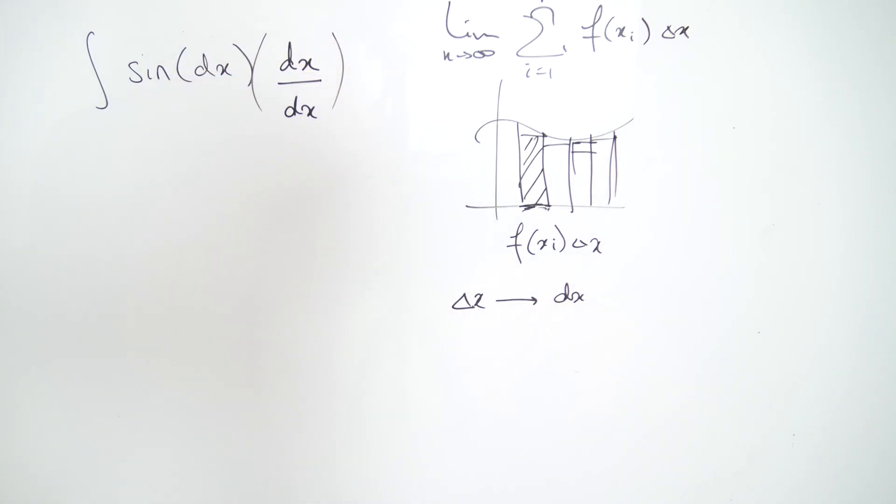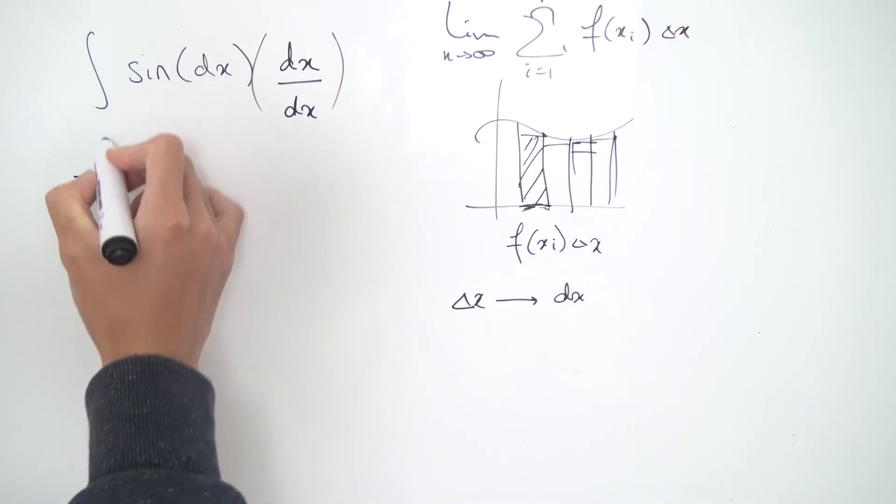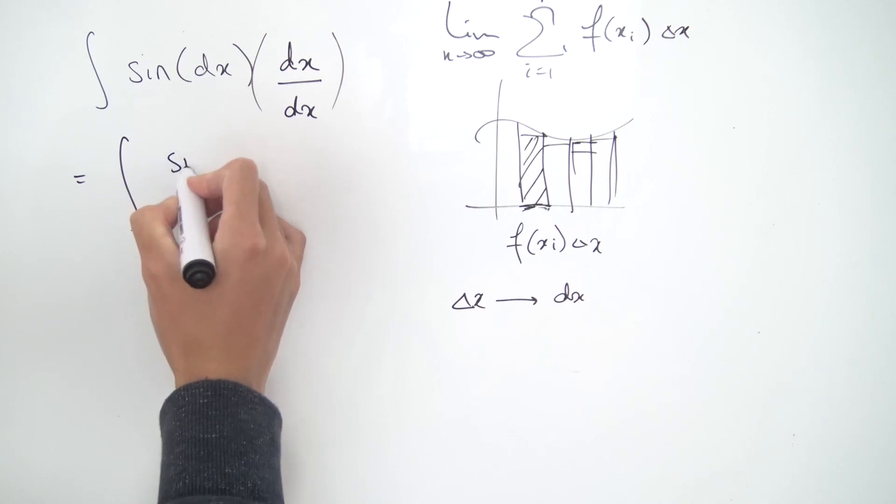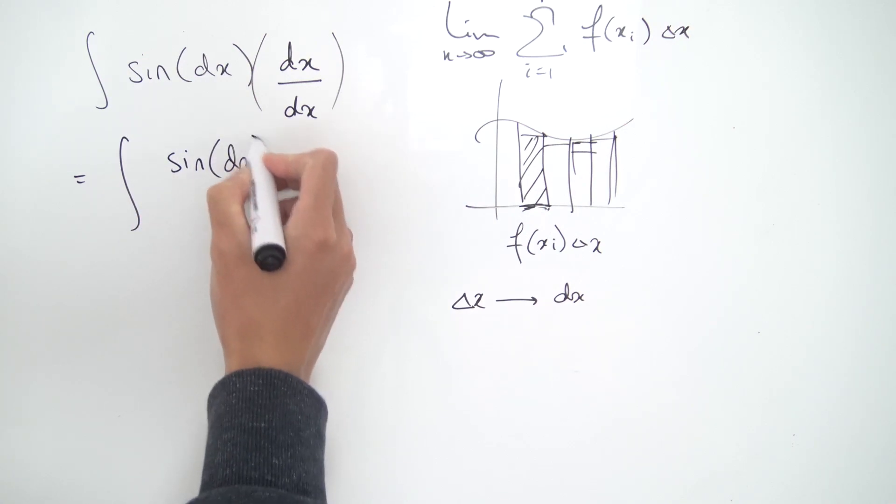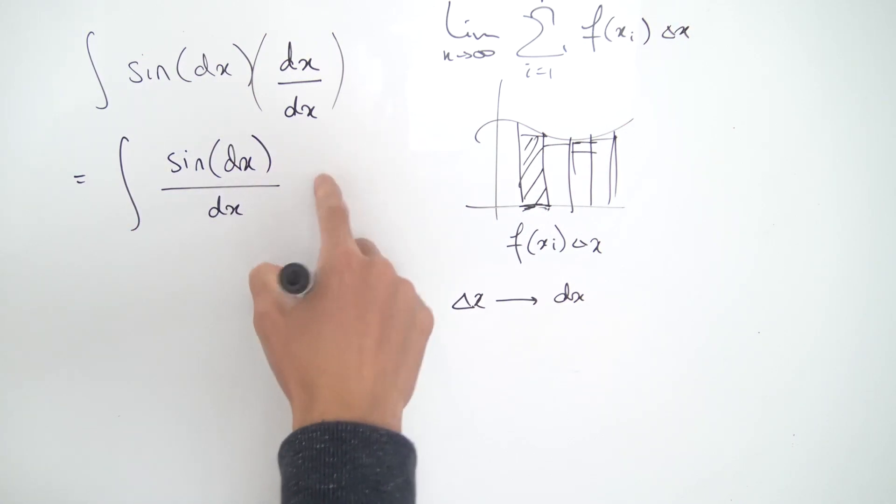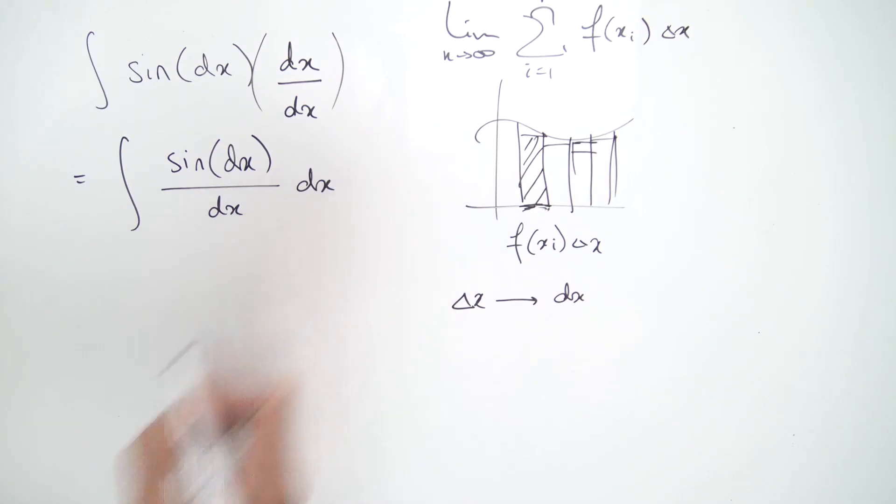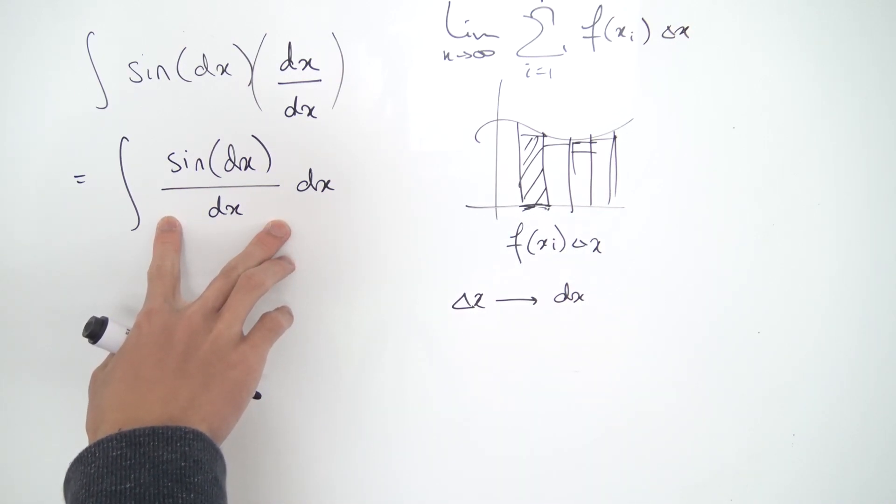Now we can rearrange a little bit, so this becomes the integral of sine of dx divided by dx, and I'm going to multiply by the dx out here. And now I'm going to work with the integrand a little bit. Remember, what exactly is dx? dx is just these delta x's as they approach zero.